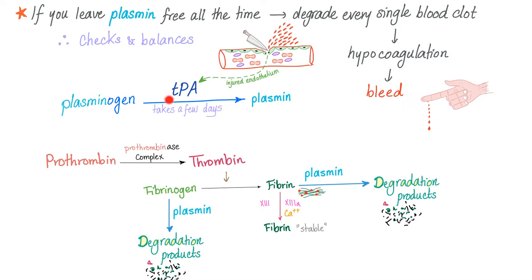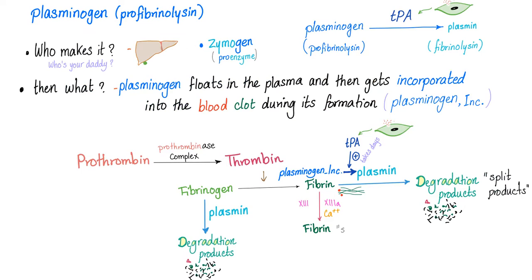That's why we need plasmin in an inactive precursor form called plasminogen. We need TPA to activate it into plasmin. Plasmin, the fibrinolysin, comes from plasminogen, the pro-fibrinolysin, which is a zymogen produced in the liver. When the clot is being formed, plasminogen gets incorporated into the fibrin fibers. Then TPA comes, converts plasminogen into active plasmin, which degrades fibrin into fibrin degradation products, fibrinogen into FDPs, and stabilized fibrin into D-dimer.